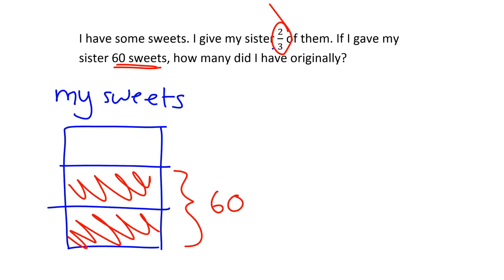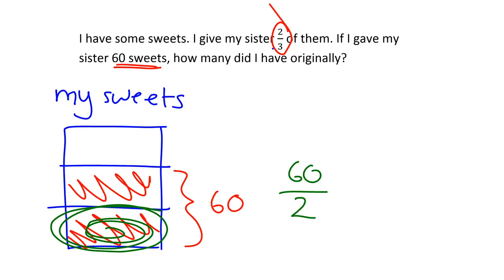Now, how does this help me and what am I trying to work out in the end? They want to know how many I had originally — originally means in the beginning. So I want to know how much my original whole big pile of sweets was. I know what those two pieces are equal to: 60. So these two pieces together are equal to 60. Can you see how I would work out what just one of those pieces is equal to? If the two of them together are 60, then to get one of them on its own, we just divide by 2 and get 30. So this one piece is 30.